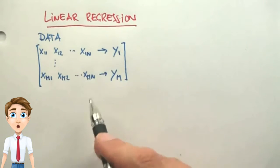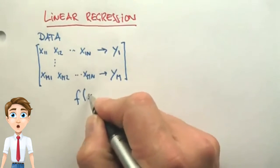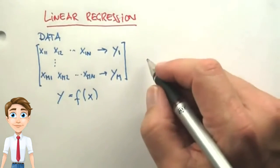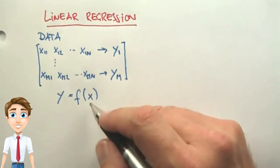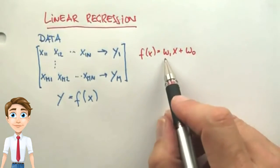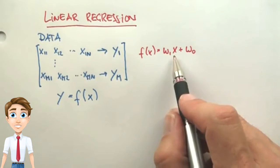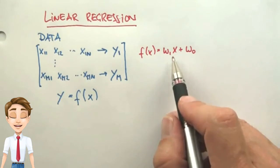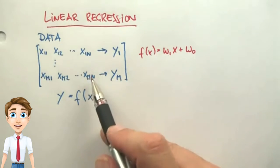Once again, we're looking for a function f that maps x to y. In linear regression, the function has a particular form, which is w1 times x plus w0, in the case x is one-dimensional, which is n equals 1.